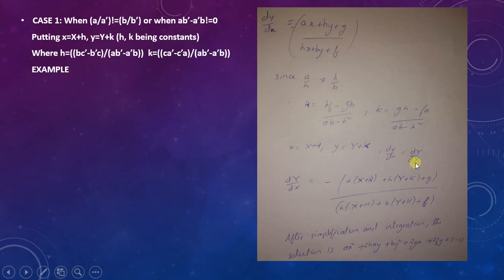dy/dx = dY/dX. dy/dx equals [a(X + H) + h(Y + K) + g] divided by [h(X + H) + b(Y + K) + f]. After simplification...